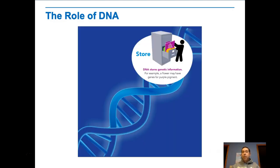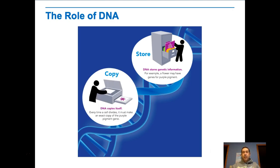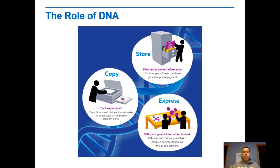So what is the role of DNA? Well, DNA stores genetic information. It's in the nucleus of eukaryotes. It can be copied, and it's really good at copying itself so that every time a cell divides, it makes an exact copy for the new cells. And it allows certain genes in certain cells to be expressed and used to do something — in most cases that's to make a protein, for instance the enzyme that makes pink or purple pigments in flowers.